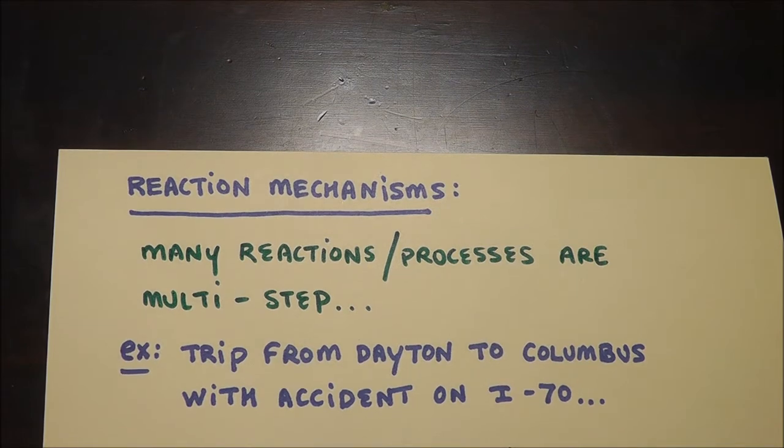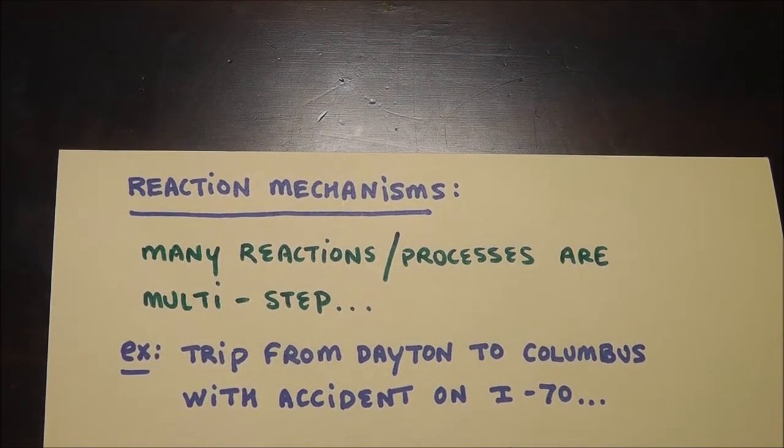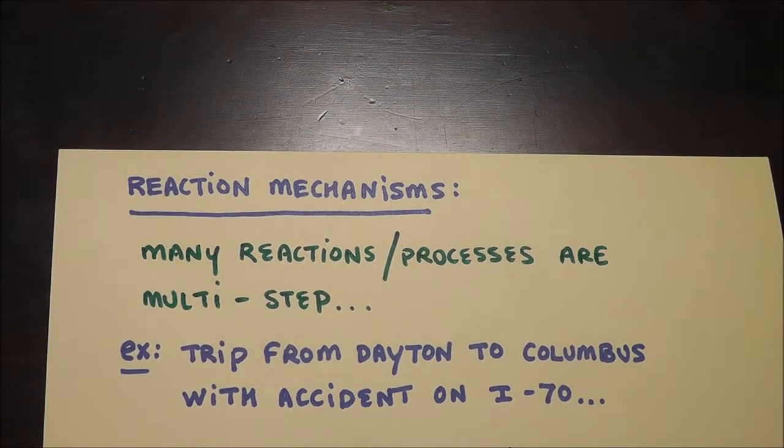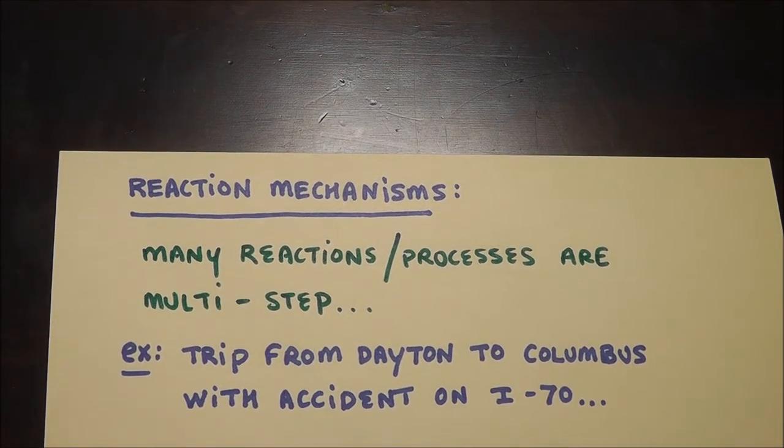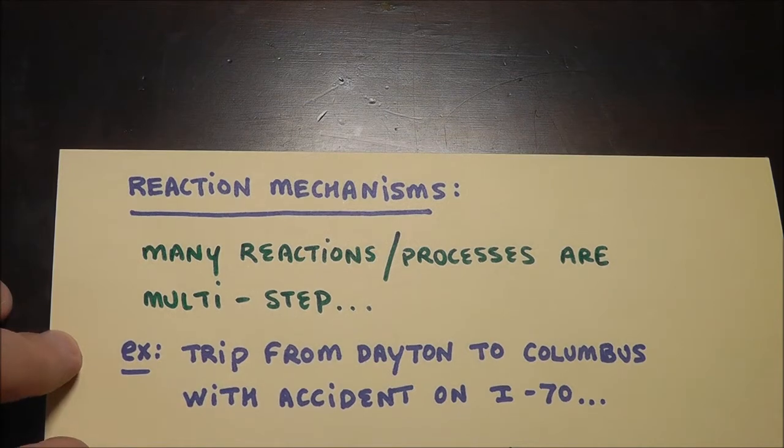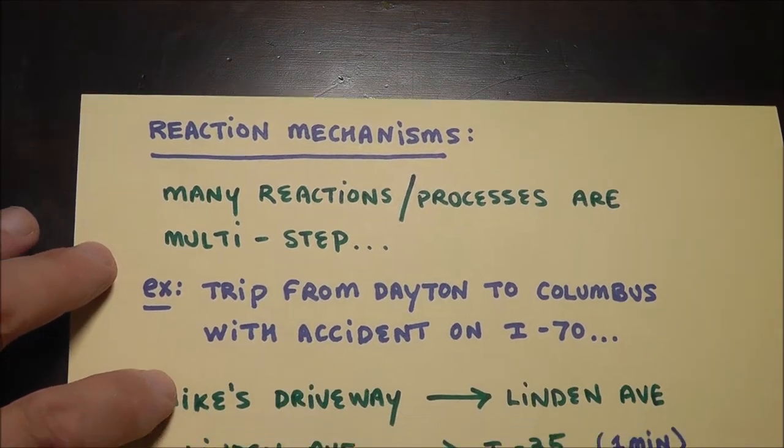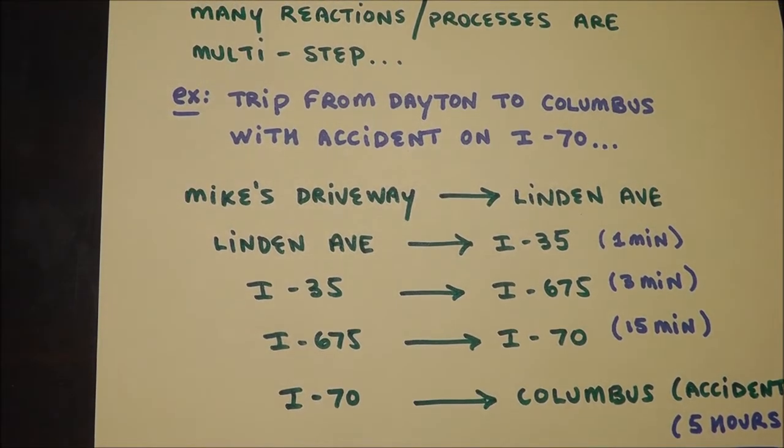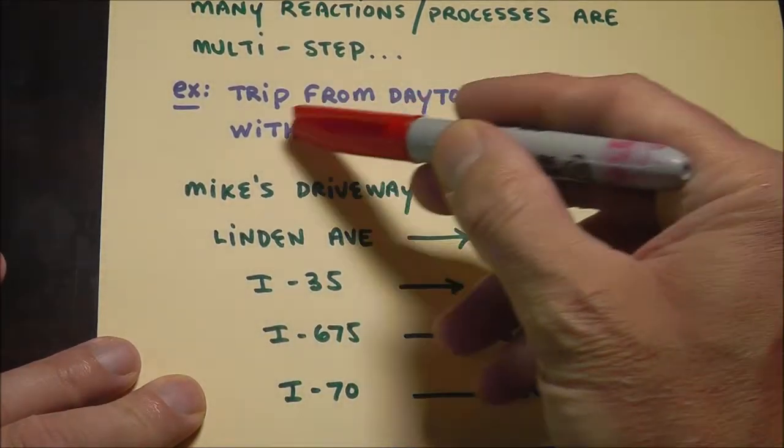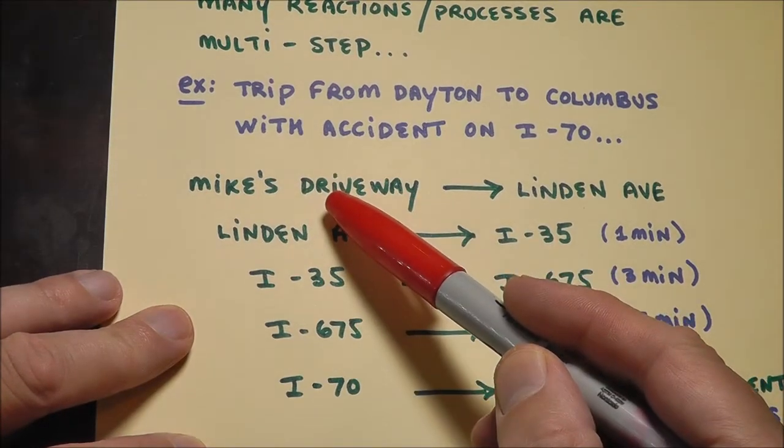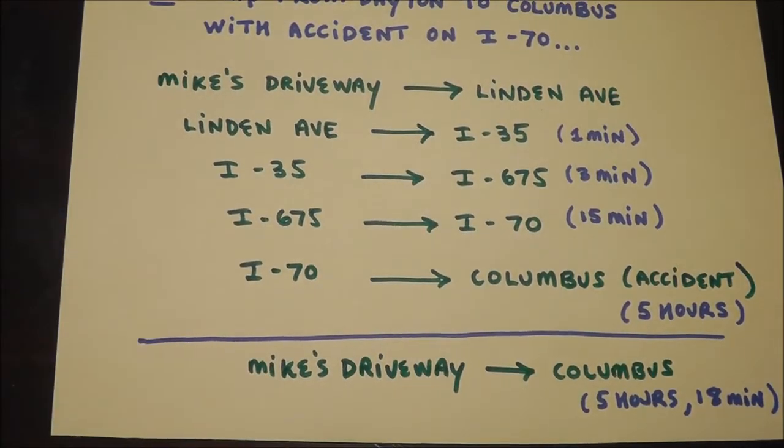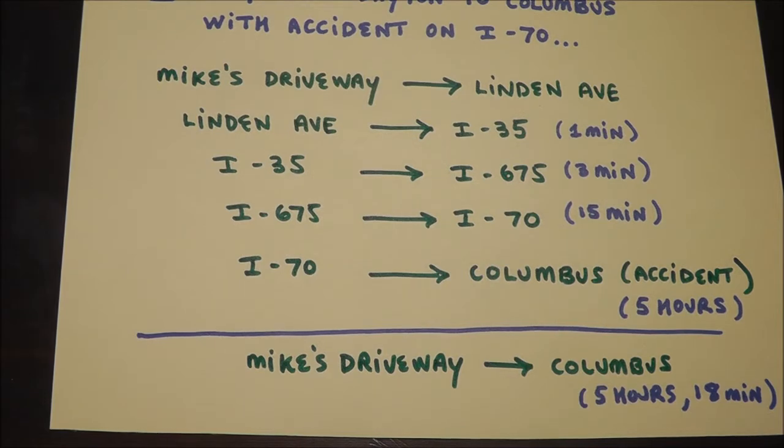Let's think about a reaction mechanism like a trip to work or school. I'm going to use the example of a trip from Dayton Ohio to Columbus Ohio, but it's one of those times when you get into a little bit of a delay because there's an accident, and I'm going to say the accident is on I-70. Here's the mechanism of the reaction and we have these individual steps. What we're going to do is we're going to call these elementary steps, the whole thing is called a mechanism.